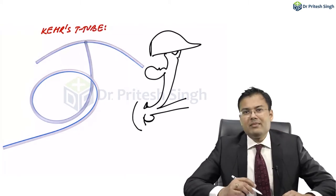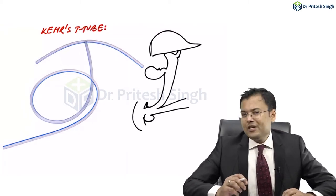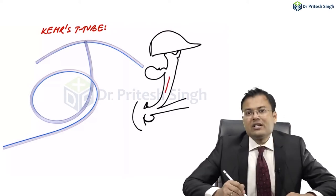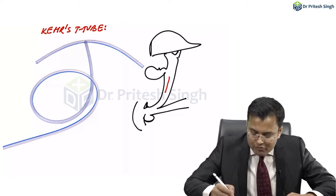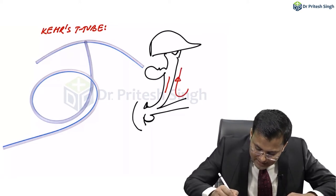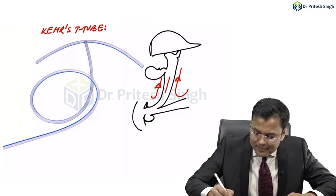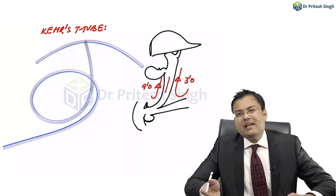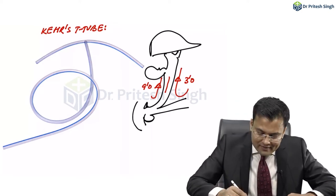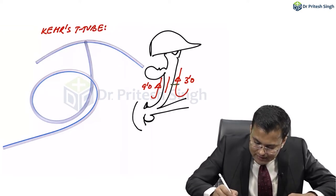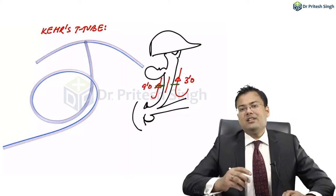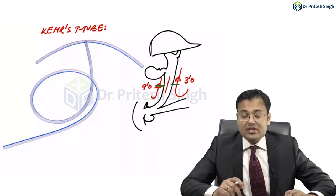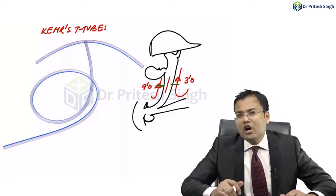We have to perform choledochotomy. The first question is: what kind of incision is given on the CBD — longitudinal or transverse? It's longitudinal. Why? Because there is coaxial blood supply of the CBD at 3 o'clock and at 9 o'clock, mainly from the inferior direction. If we go for a transverse incision, there is division of the vessels leading to ischemia, which can lead to stricture. That's why the incision is longitudinal.